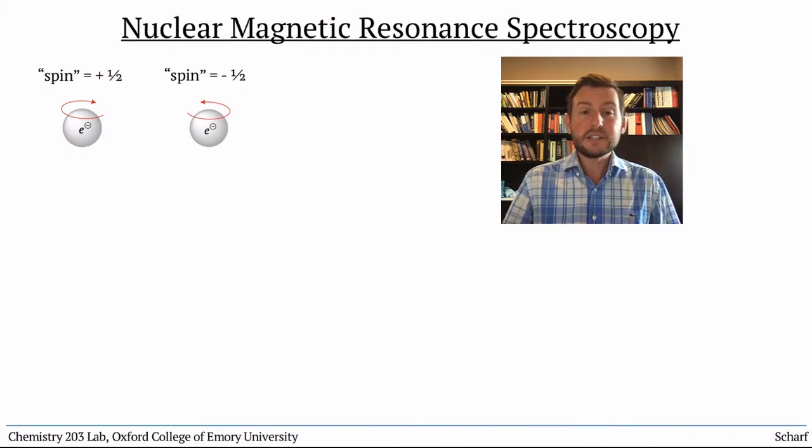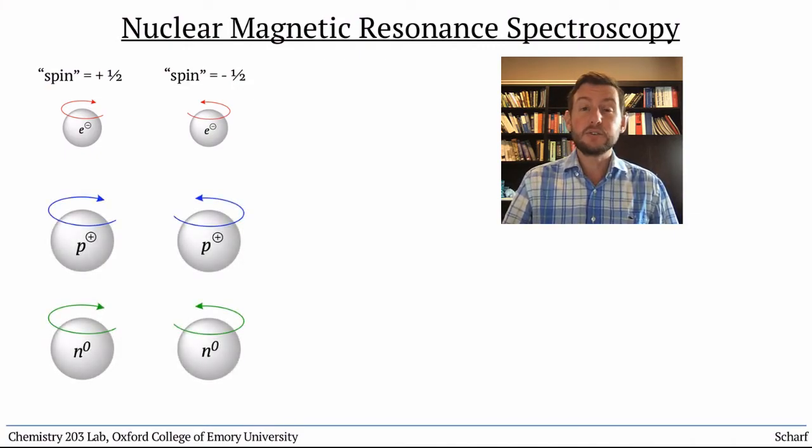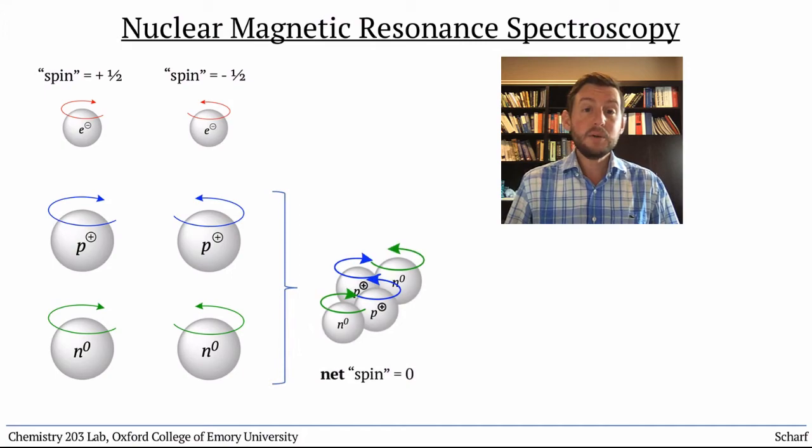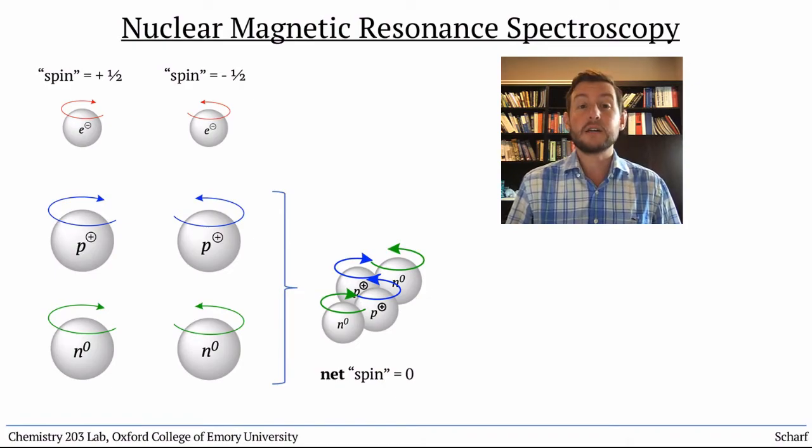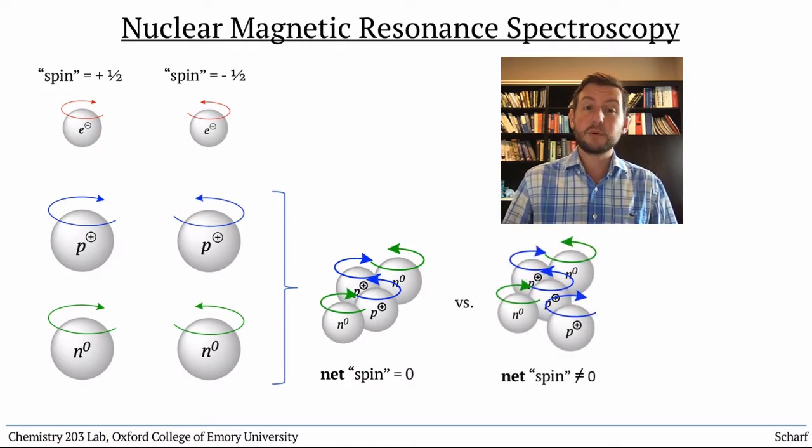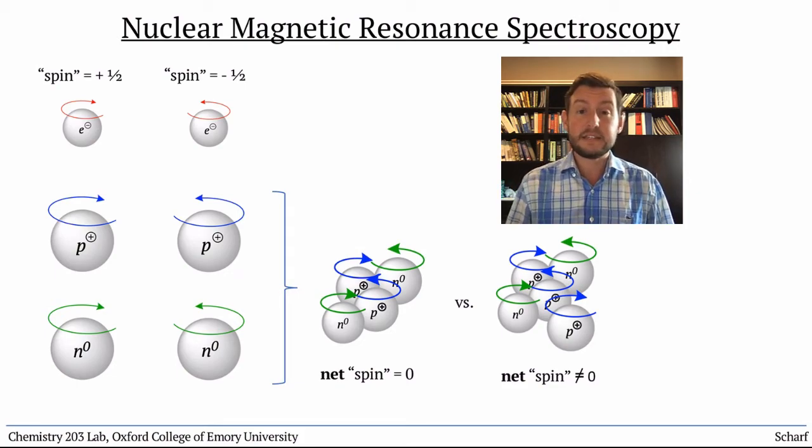Well, it turns out that protons and neutrons, the components of atomic nuclei, also possess this property. In most atoms, the spins of all the protons and neutrons in the nuclei cancel out, much like electrons spin pair. However, some nuclei, especially those with odd numbers of protons and neutrons, have net spin that isn't zero.